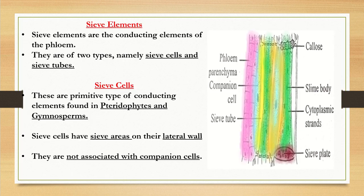Sieve elements are the conducting elements of the phloem. There are two types of sieve elements: sieve cells and sieve tubes. Sieve cells are the primitive type of conducting elements present in pteridophytes and gymnosperms. Sieve cells contain a sieve area on their lateral wall and are not associated with companion cells.